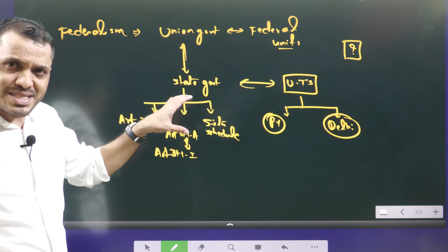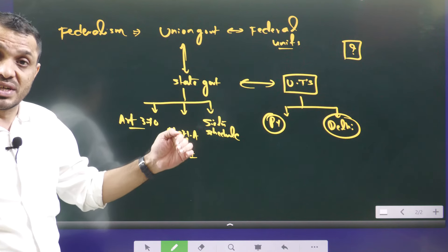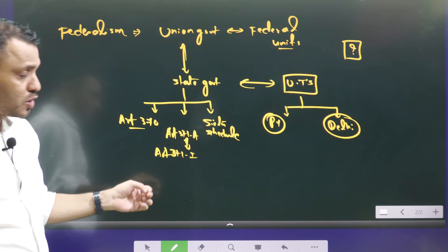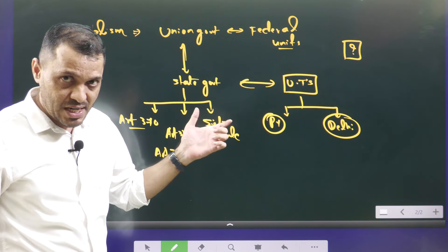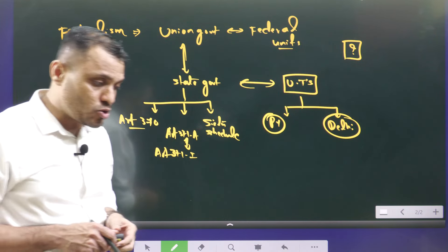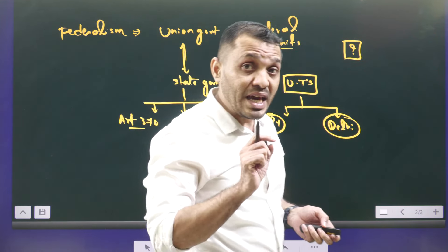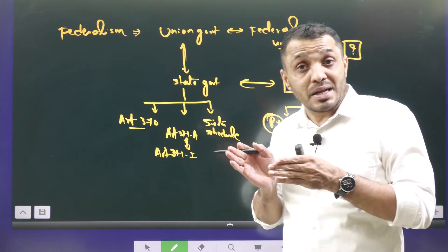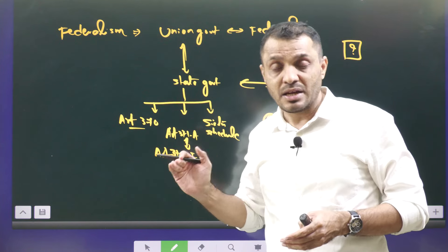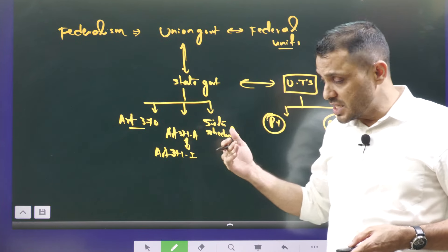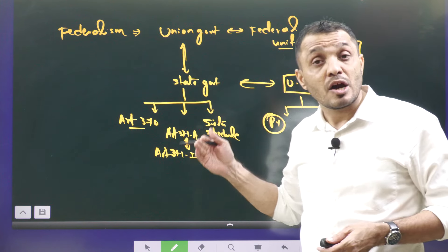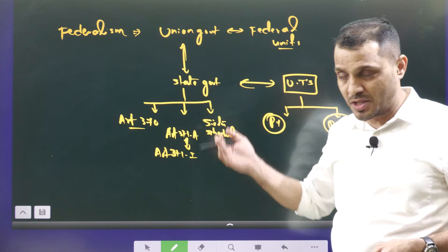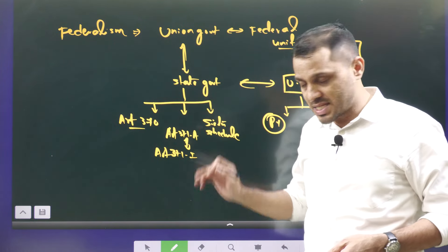From this concept, you must understand that there are two different types of asymmetric federalism in India. One is vertical asymmetric federalism, and the other is horizontal asymmetric federalism. Now we are going to discuss why we have this feature — why some states have had asymmetric federalism for so many decades, and what are the arguments supporting and against it.